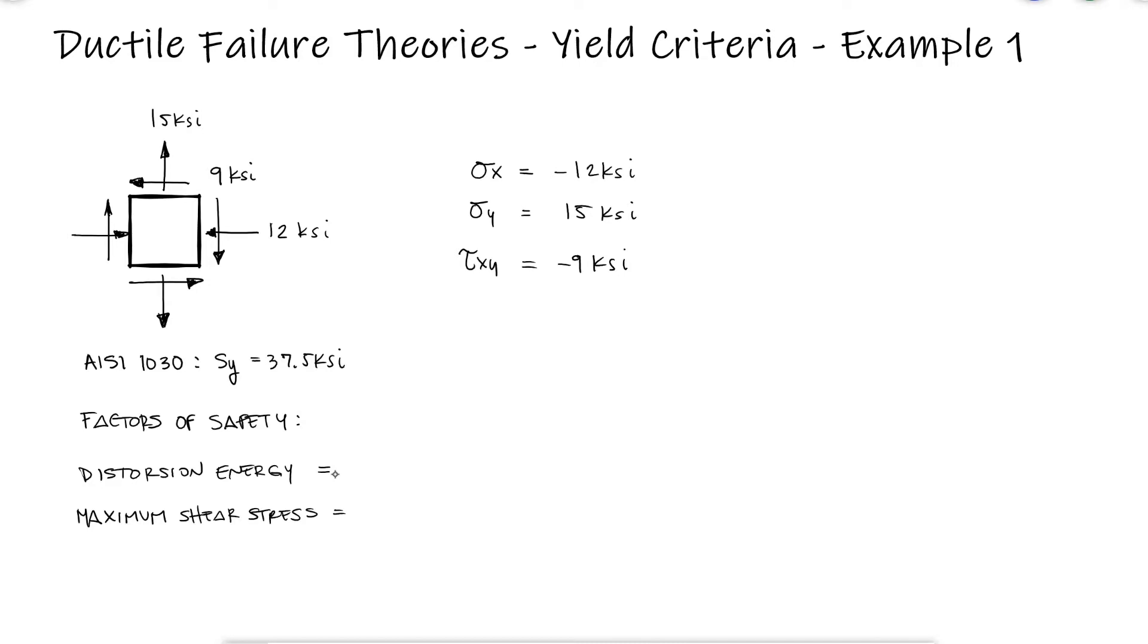From that main video we know that the distortion energy factor of safety will be equal to the yield strength over the von Mises stress, so we'll need to calculate the von Mises stress first.